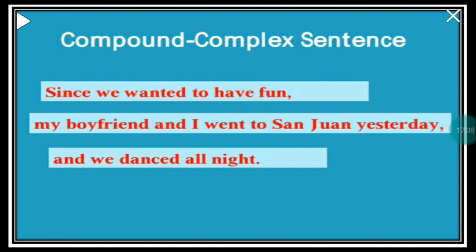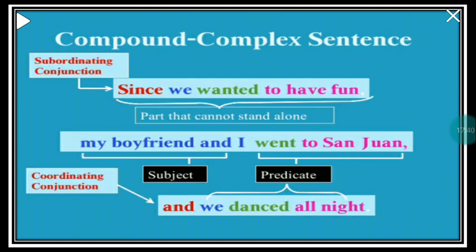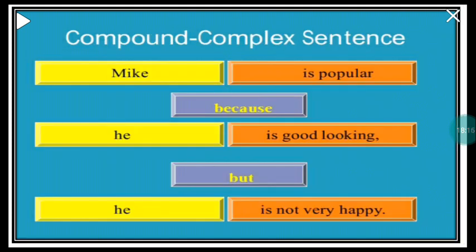This is a compound complex sentence. 'Since we wanted to have fun' is the subordinate clause — the part that cannot stand alone. 'My boyfriend and I' is the compound subject; 'went to San Juan' is the predicate. Then we have the coordinating conjunction 'and.' 'We' is again the subject and 'danced all night' is another predicate. The second and third parts are independent clauses, making this a compound complex sentence.